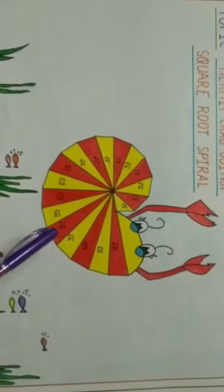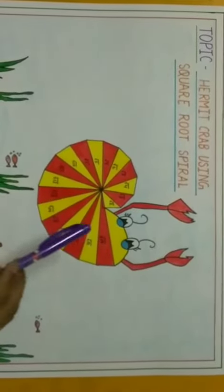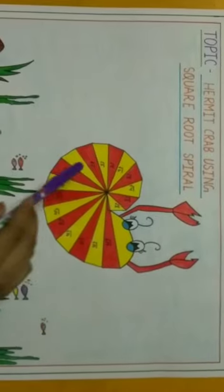Similarly, for all other triangles, we take the base as root 4, root 5, root 6, root 7, and we take the perpendicular each time as one unit.